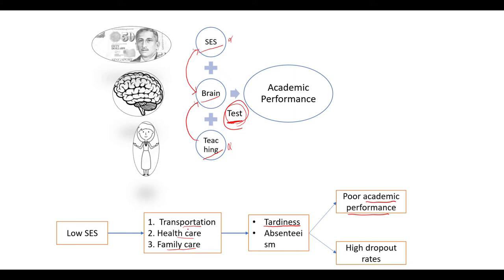Test validation and test development should not be limited to statistical and psychometric analysis using IRT and similar models. It should go far beyond that. We need to take into account the background of the kids who take the tests and ask ourselves if it's fair to compare kids coming from these backgrounds with kids from high SES backgrounds. Research also shows there is a high dropout rate among low SES children compared with those from high SES backgrounds — that's another factor to consider.